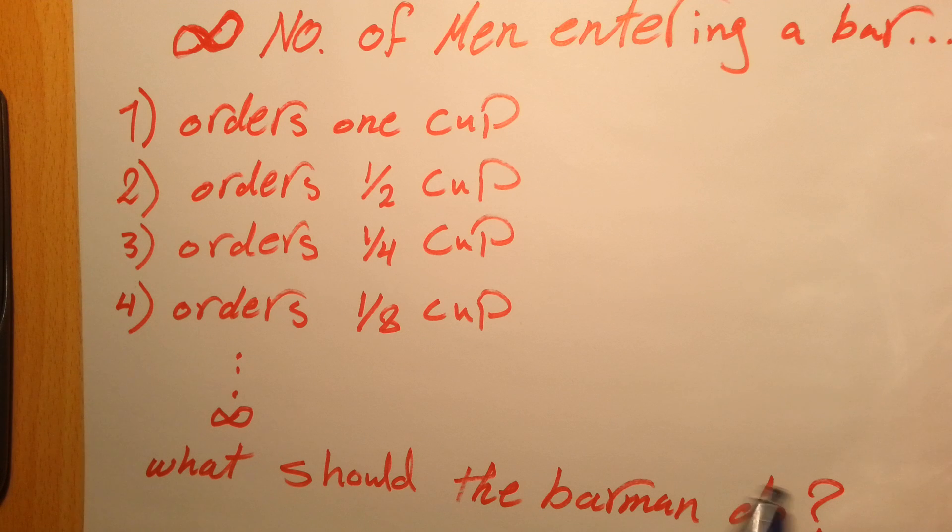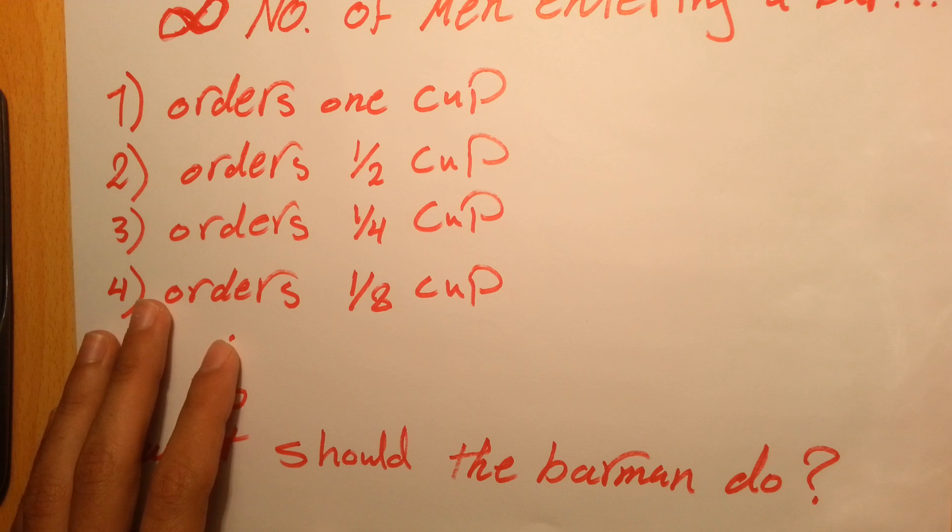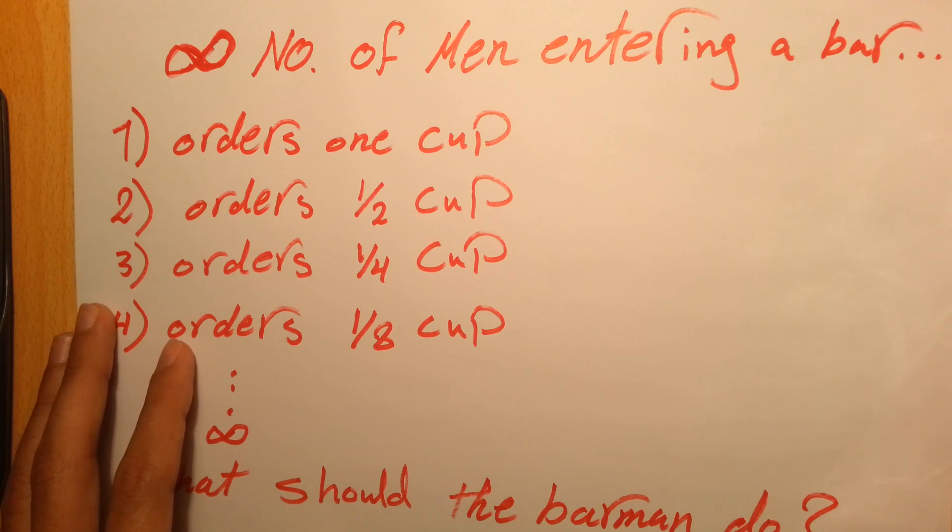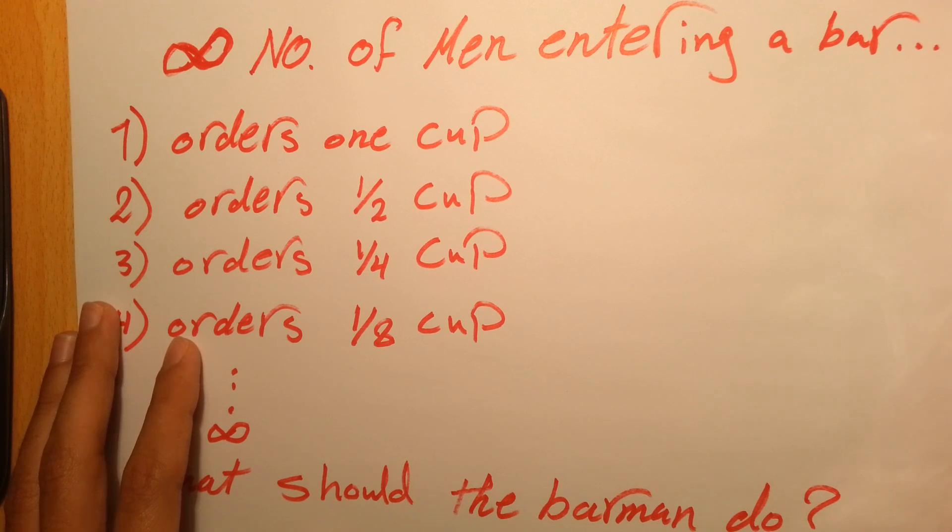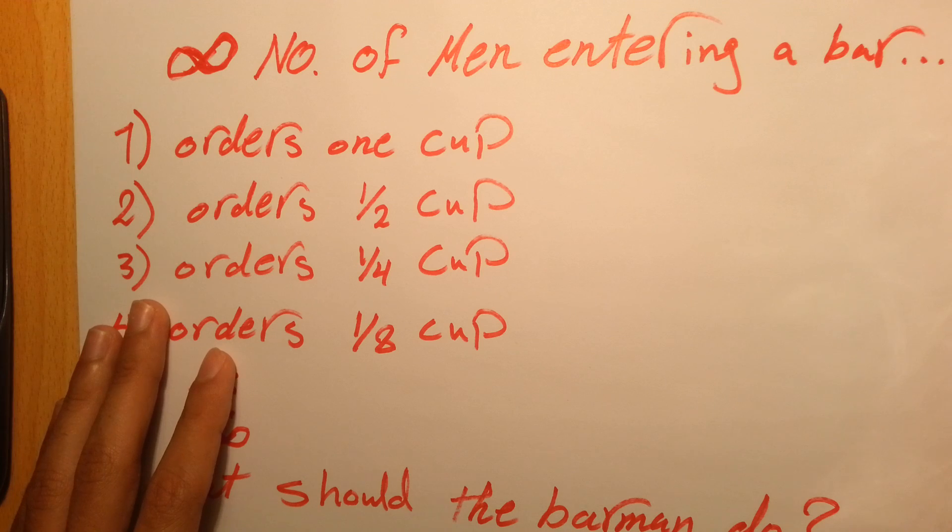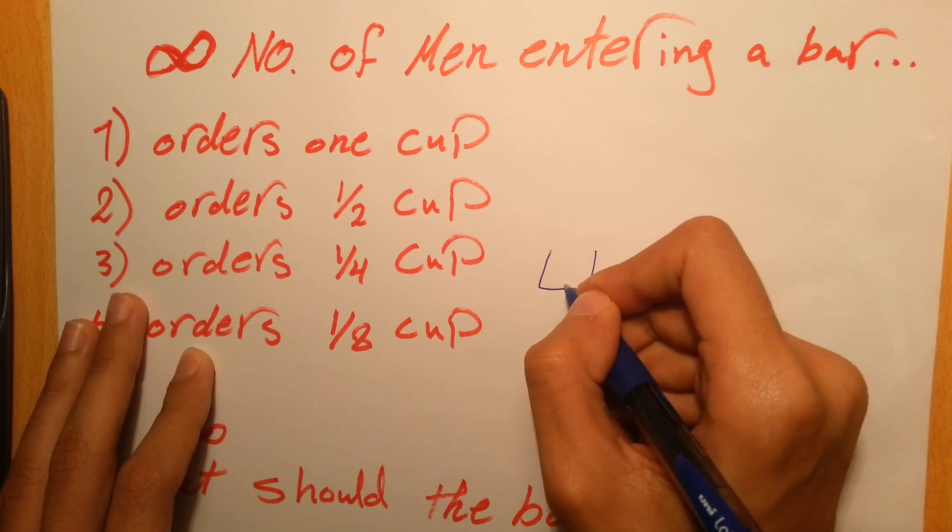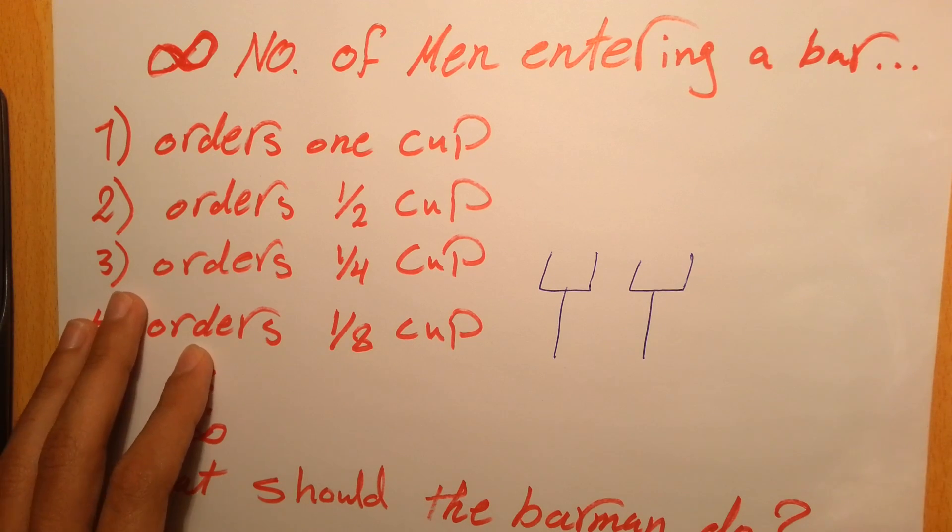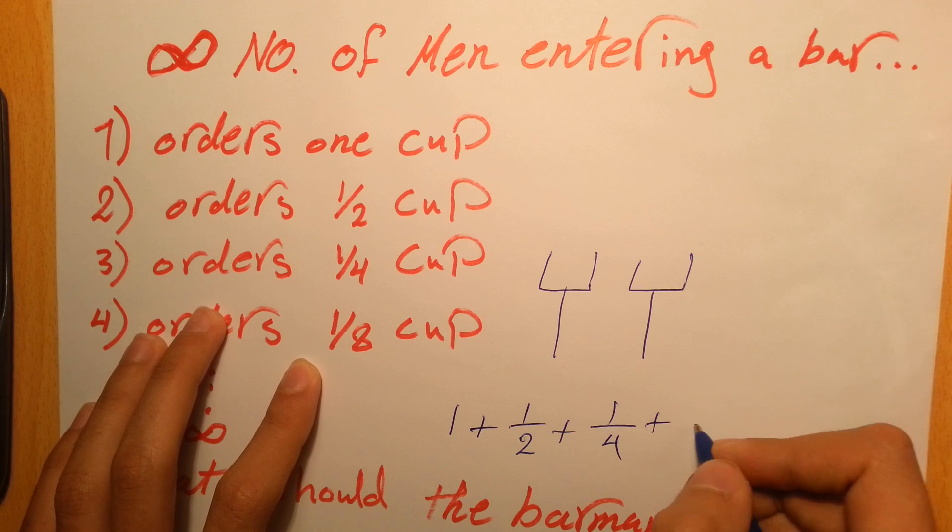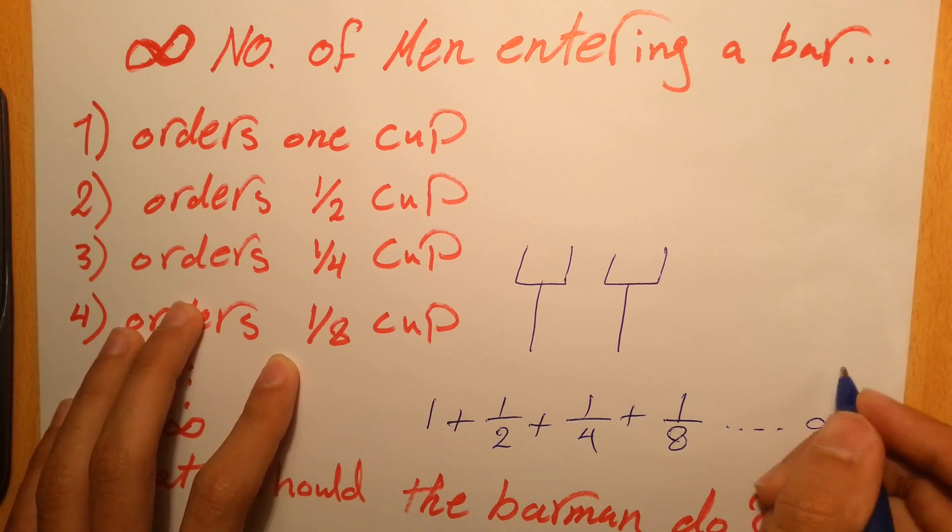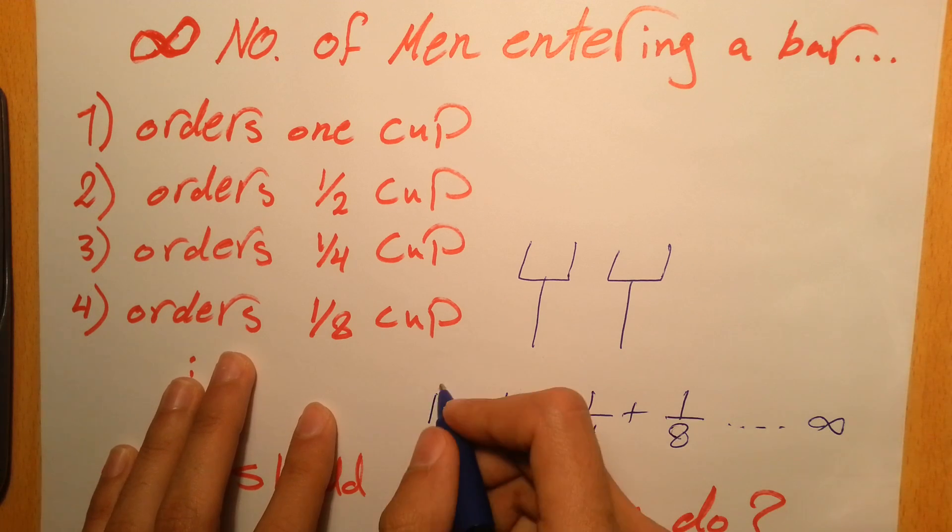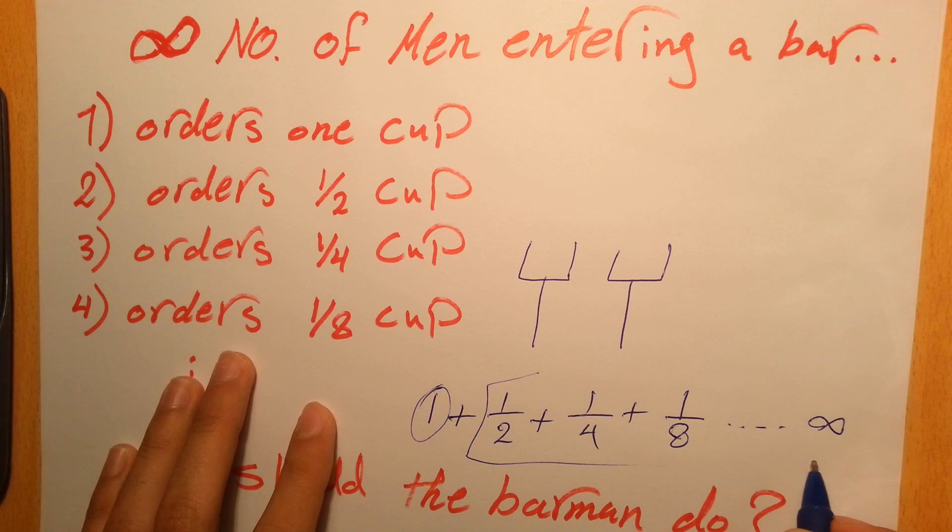So what should the barman do? He has a lot of choices. Maybe he's not smart, so he'll quit his job because he can't deal with infinity. Or he'd like his job and he'll think that he's going to be a millionaire because they are going to order infinitely many cups. But if he's smart enough, he would only serve two cups. And that's because adding 1 plus 1/2 plus 1/4 plus 1/8 up to 1 over infinity gives you only 2. This is the one, and the sum of 1/2 up to infinity gives you only one. And this is a very famous mathematical phenomena.